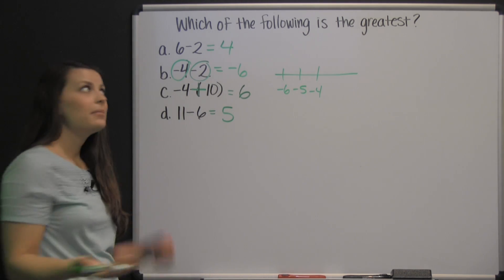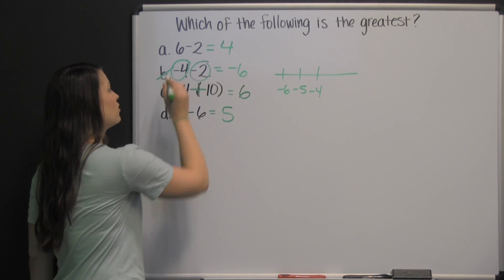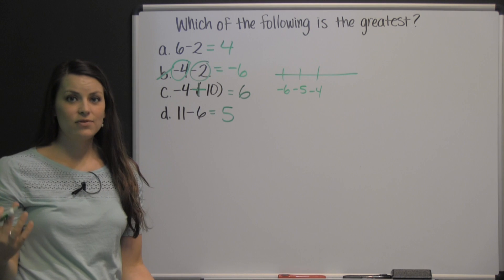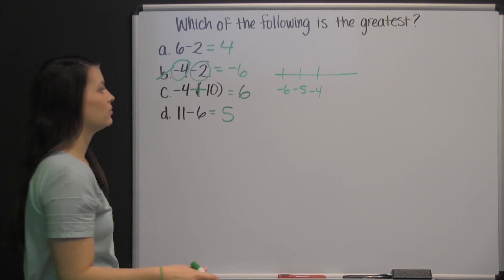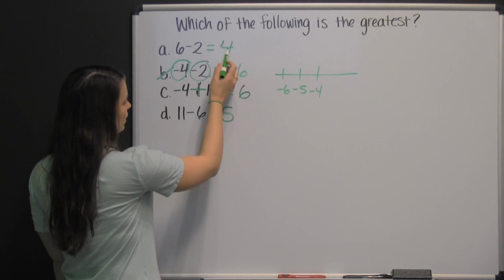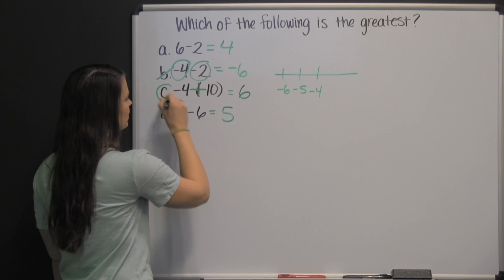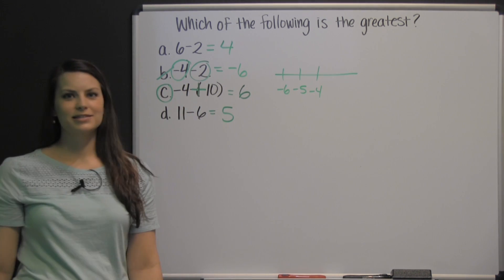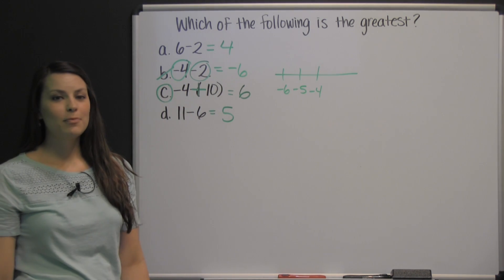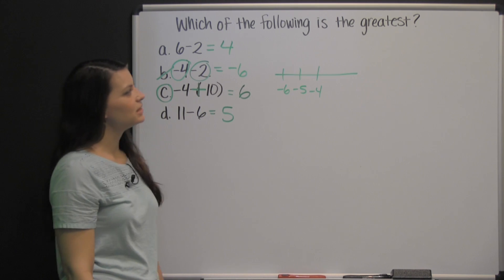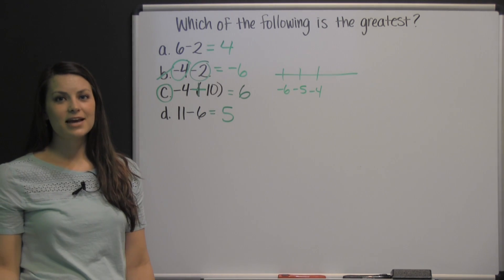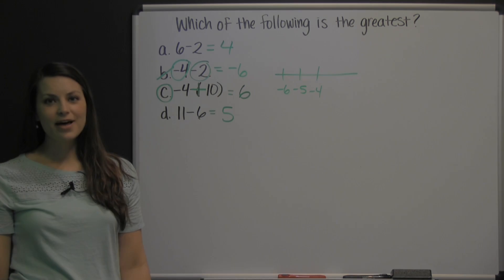So we can immediately eliminate the negative numbers being our greatest, because all negative numbers are smaller than positive numbers. So then it's just between four, five, and six, and six is the greatest. So there you have a problem from an HSPT practice test, so that you can get an idea of what you're facing. Good luck.